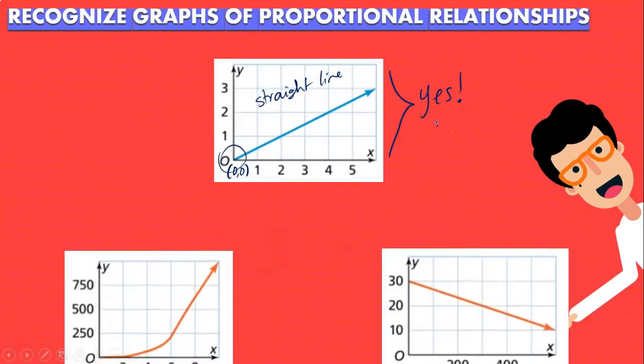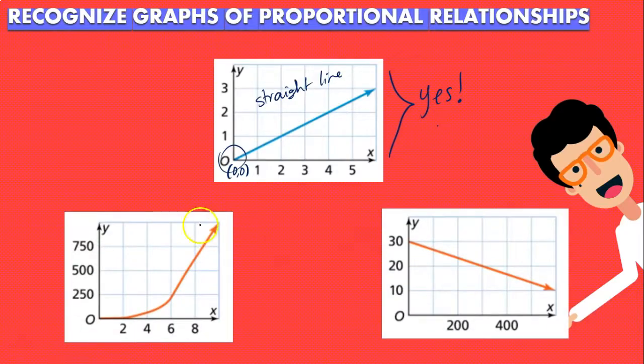But what about these other two graphs? Well the first one does pass through the origin but as you can see by this curve right here, that means that this is not a straight line, meaning that this is not a graph showing a proportional relationship.